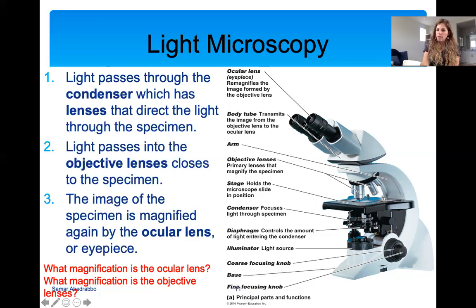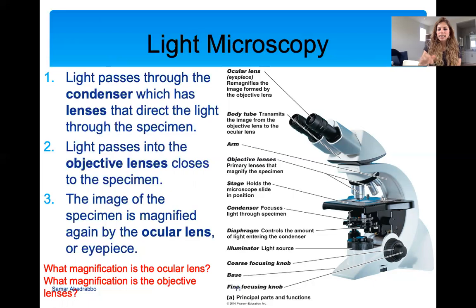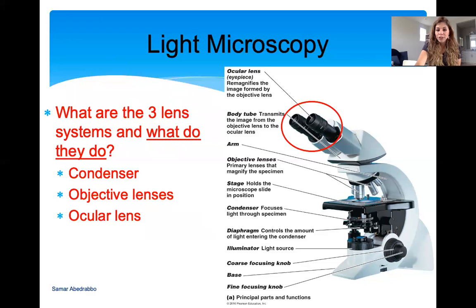The ocular lens has a default magnification of 10x — it magnifies anything by 10 times. If you want more magnification, you use the objective lenses, and there are four objective lenses on your light microscope: 4x, 10x — the one you use in lab — 40x, and 100x. The function of these is to give you higher magnification.